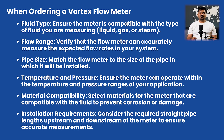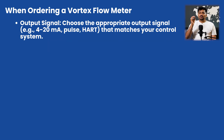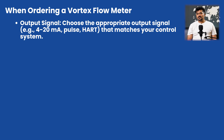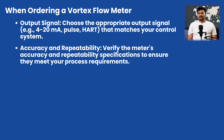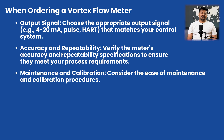Seventh, output signals — choose the appropriate output signals such as 4–20 mA, 0–20 mA, pulse output, or HART protocol that matches your control system. Eighth, accuracy and repeatability — verify the meter's accuracy and repeatability specifications to ensure they meet your process requirements.